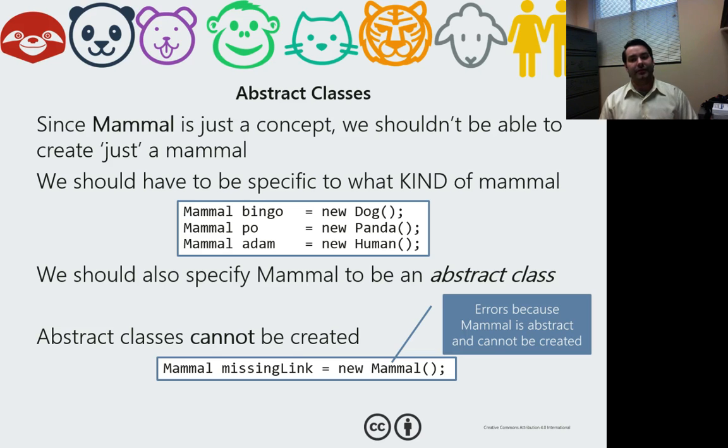Now, why do we continue to do this? Again, mammals are abstract concepts. But through polymorphism, what this allows us to do is now say, well, a mammal I can make. I can make bingo. And just like we learned in polymorphism, I can create a mammal that is equal to something that inherits from it.